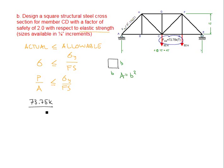73.75 kips divided by B squared must be less than or equal to the yield stress of structural steel, which is 36 KSI. We can look this up in table A-17 along with other material properties. Our factor of safety is 2.0.